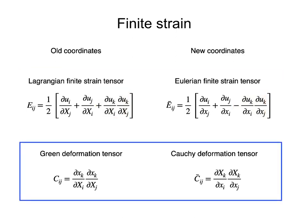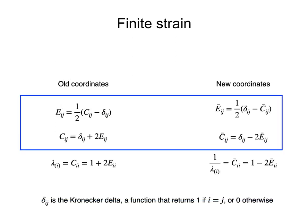We can also define deformation tensors as a function of the coordinate transformations in the undeformed or deformed states. These are called the Green and Cauchy deformation tensors, respectively. The finite strain tensors and deformation tensors are symmetrical tensors, and they are related by these formulas.